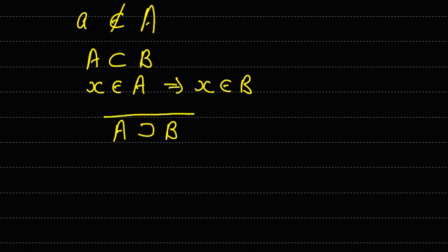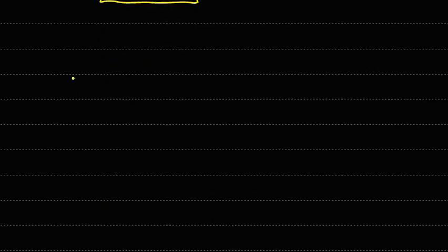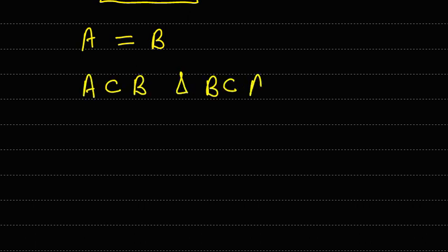When we write A ⊆ B, it means B is contained in A. We say that A equals B — we say A is equal to B — if A is contained in B and B is contained in A. If A is contained in B and B is contained in A, then we say that these two sets A and B are equal.